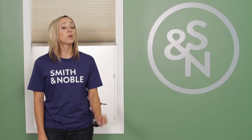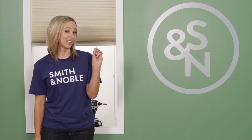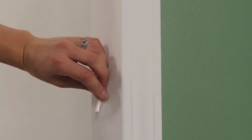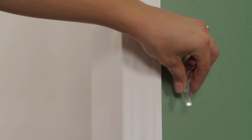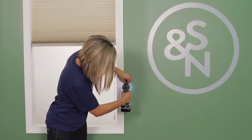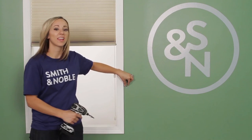Standard shades should be used in conjunction with a cord cleat in order to meet child safety standards. Cord cleats are mounted to the inside of your window frame, directly to the molding, or outside your window. They keep the shade's cords organized and out of reach.